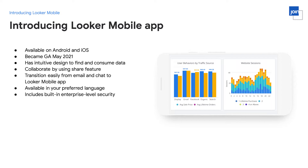We have built an intuitively designed app so that you can get to your content quickly and easily. Visualizations and charts look as beautiful as they do in Looker web. You can turn your mobile to landscape mode for a better view of your charts. The app works in your preferred device language, and it also has a seamless transition from your other work apps like emails or chats where you might receive content — so you can transition from your email to the Looker app and keep viewing your content without losing context.